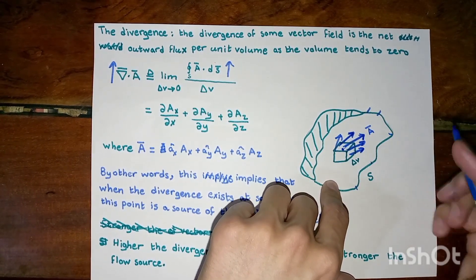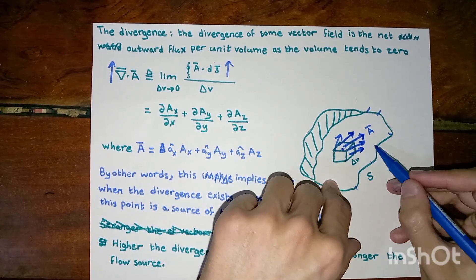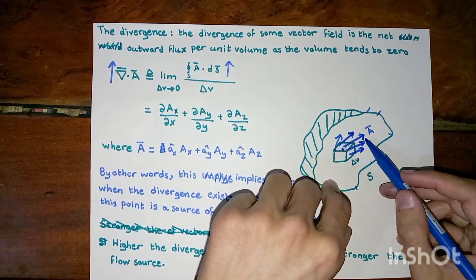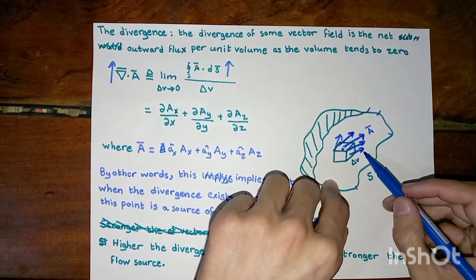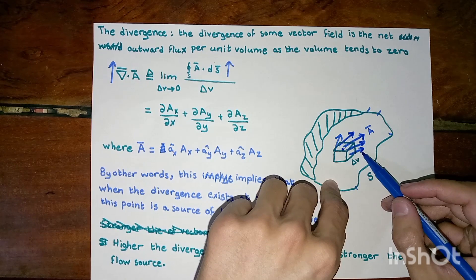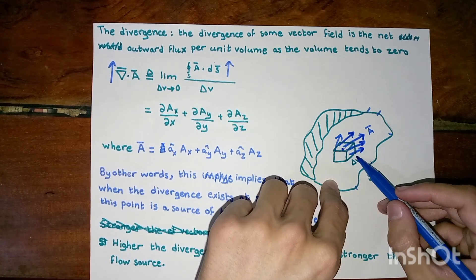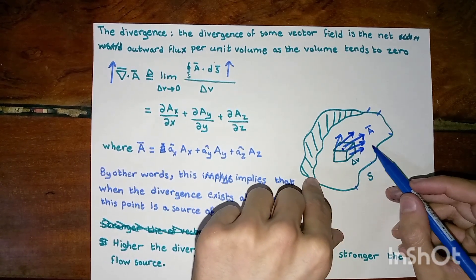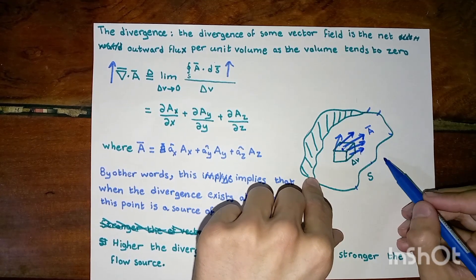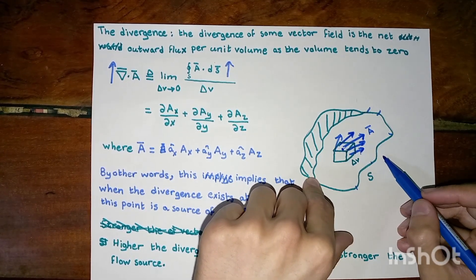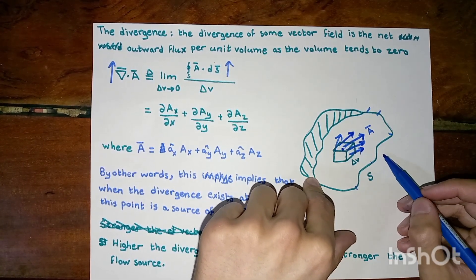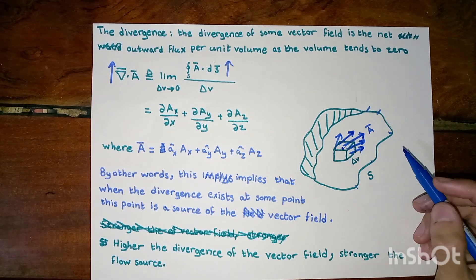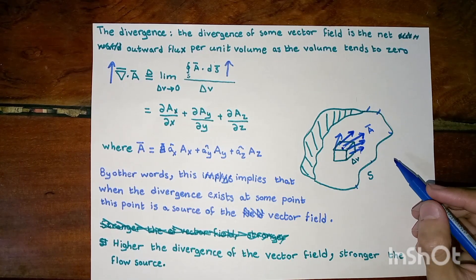In other words, when we take the surface integral of A, this tells us the magnitude of the outward flow from this area. And if we divide this surface integral by V, the volume of this shape, it tells us about the outward flux per unit volume.